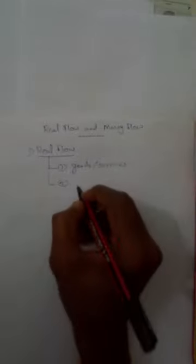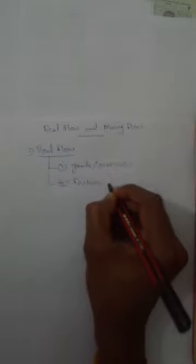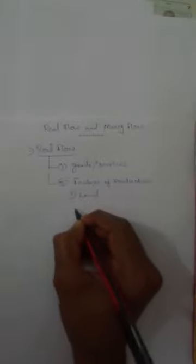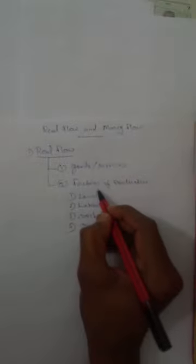Real flow has two parts. First one is goods and services. Second one is factors of production. Factors of production includes four components: land, labor, capital, and organization. These are the four factors of production and the components of real flow.